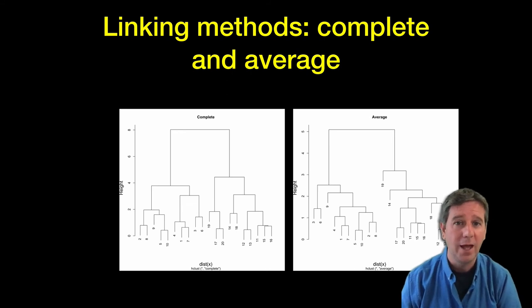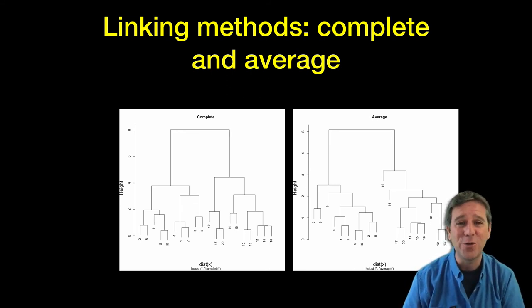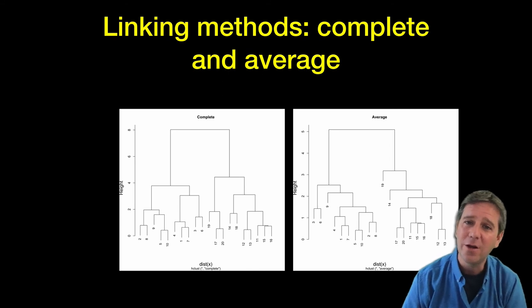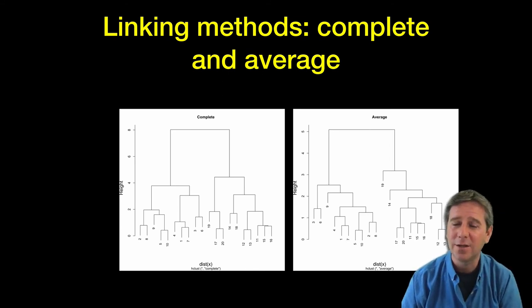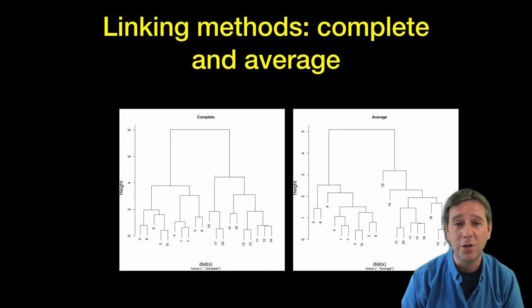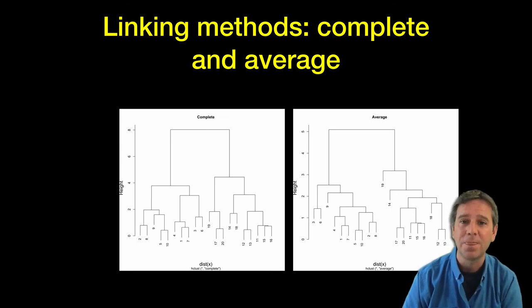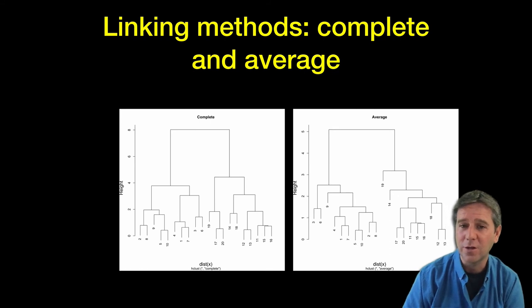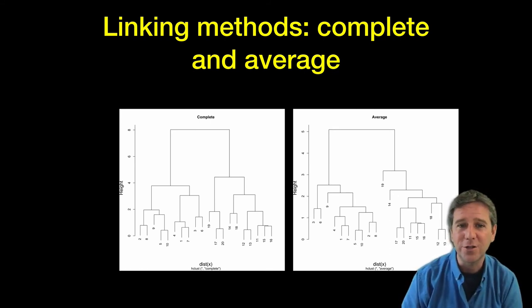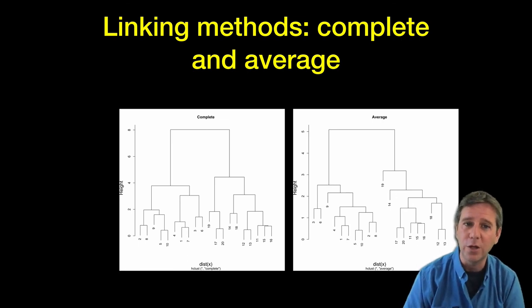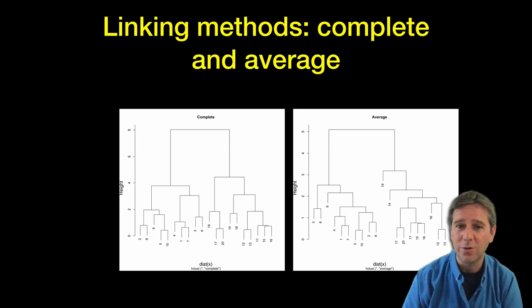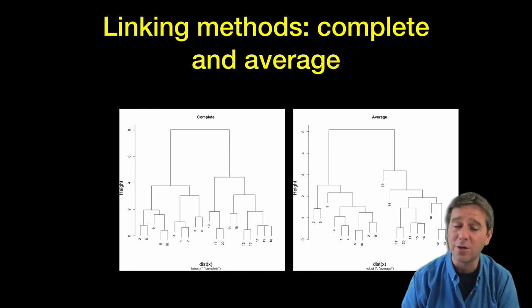Because we're using different values, the dendrograms you get out look different - you're using different heights for the crossbars. Here I'm comparing complete and average linkage methods. You can specify this when calling hclust by setting the method argument. The trees look different with slightly different branching. However, the clustering result, if we split into the two main groups where the largest goalpost is, is exactly the same with either method. Our result is robust to our choice of linkage method, which is a good thing.